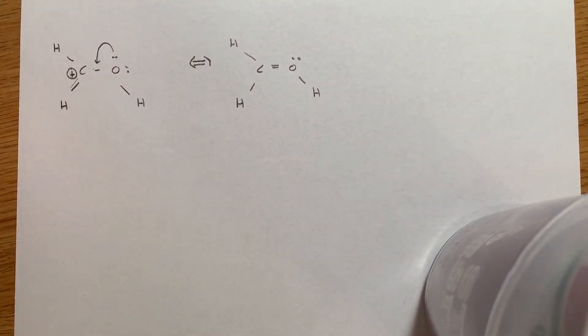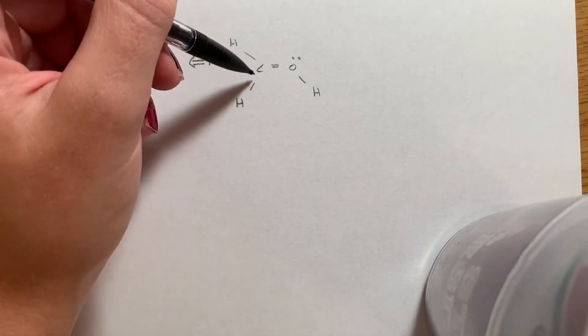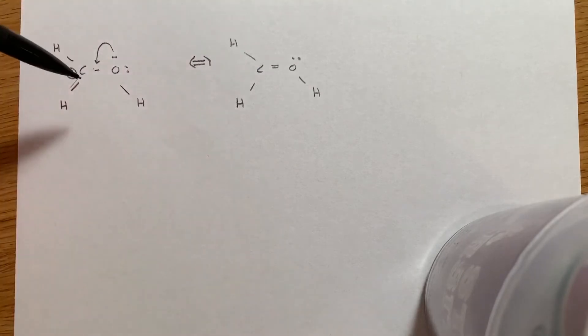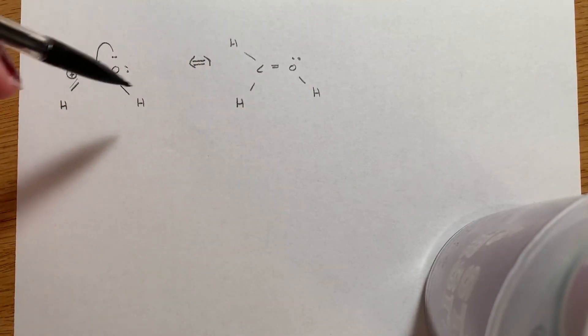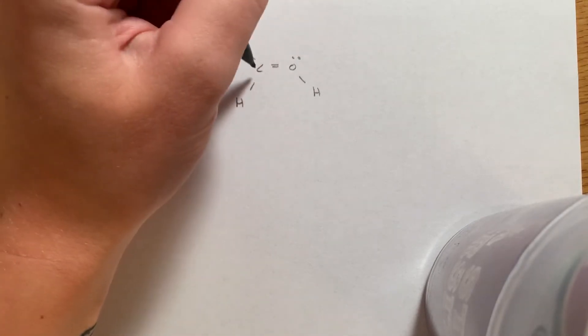And let's double check our formal charge, right? Because this one had a charge on it. So that means that this has to have a charge on it, because the charge stays the same between resonance structures, period, every single time. So our net charge.